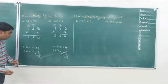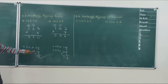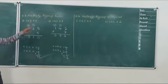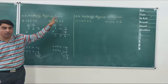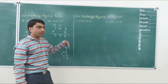And if you observe, we have to regroup the numbers twice. That's why this is called multiply and regroup twice. So let's see one more question.